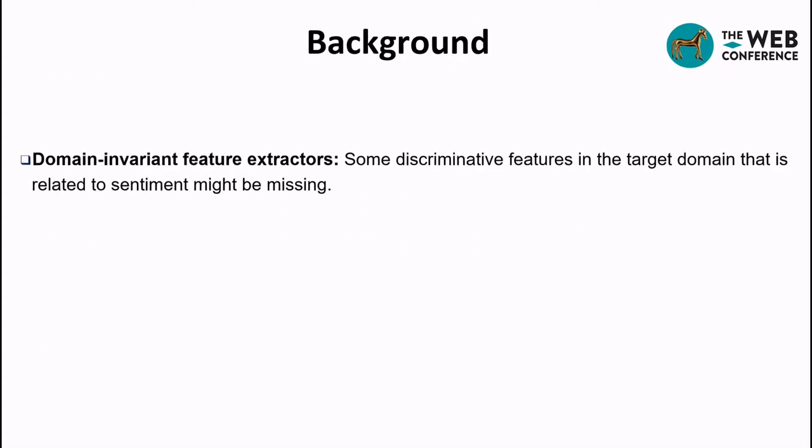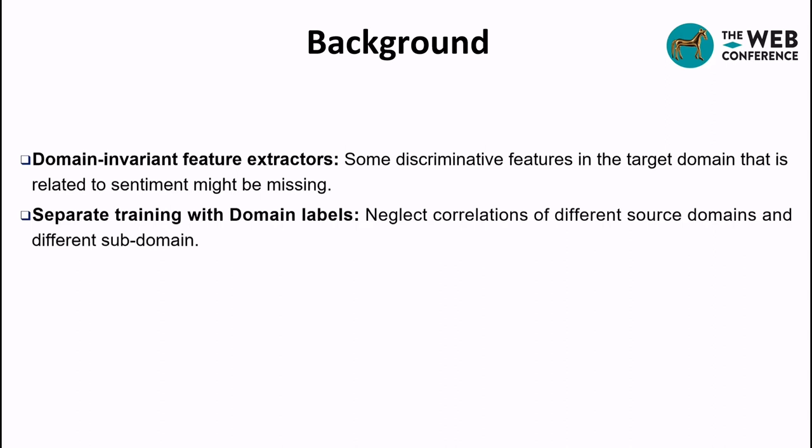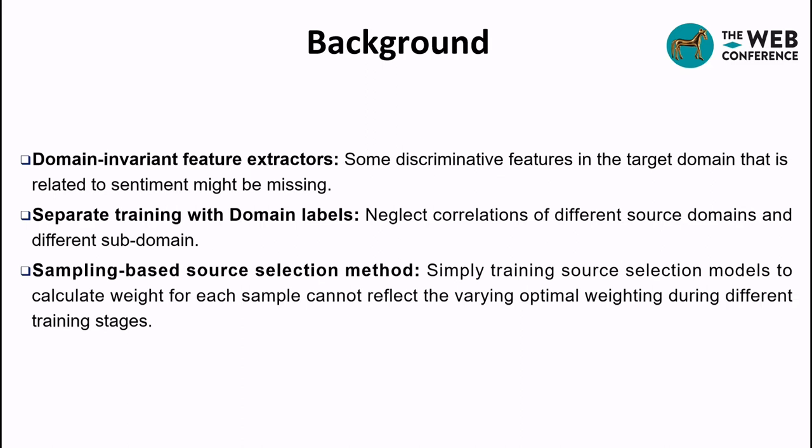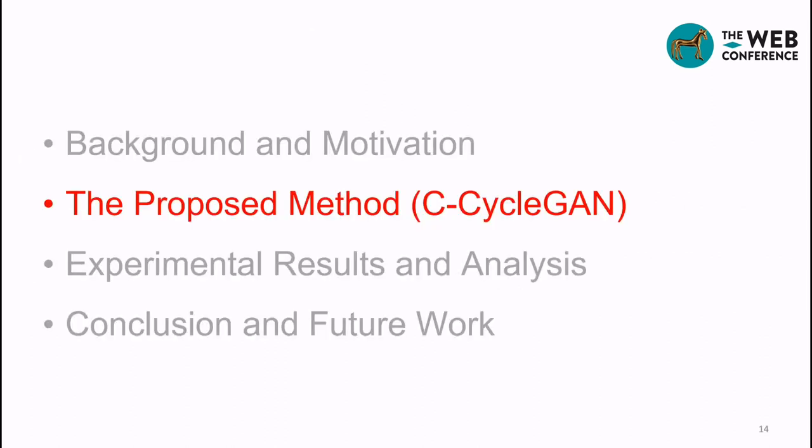We have some observations. Previous methods all use shared feature extractors, which separates discriminative properties from domain-invariant features. Different source domains and subdomains may have correlations with each other, but previous methods neglect them. Previous sampling-based source selection methods simply train source selection models to calculate weights for each sample, which cannot reflect the varying optimal weighting during different training stages. In this paper, we propose C-CycleGAN to address these challenges.